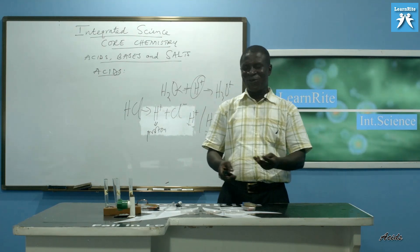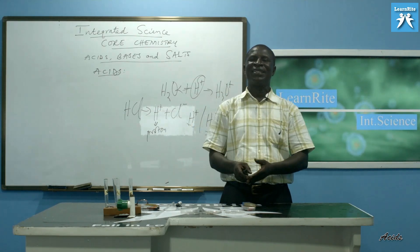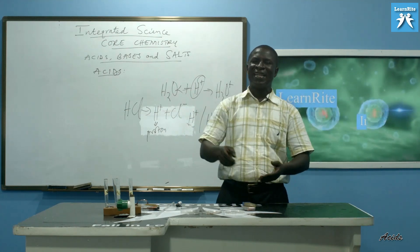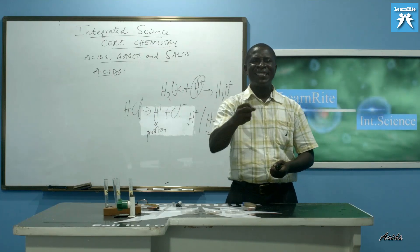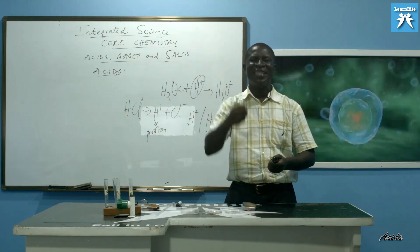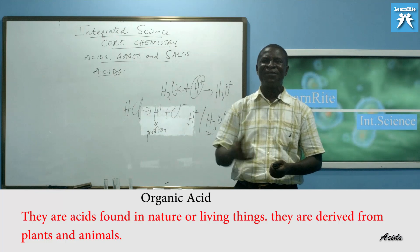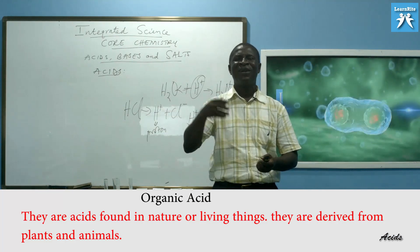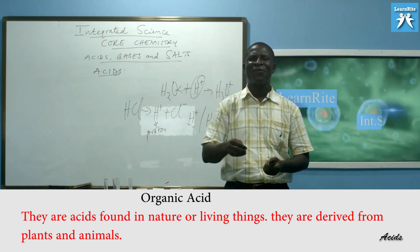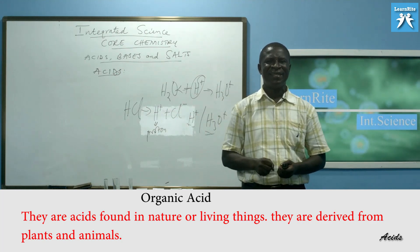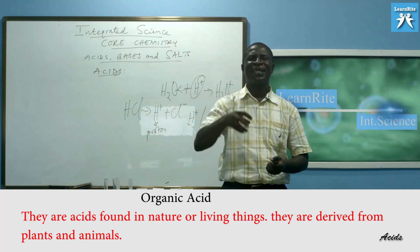Our next group to know is organic acids. So I told you we have two groups of acids. Inorganic acids and then organic acids. What are organic? Anything organic is natural. We find it in nature. So there are acids found in nature or acids found in living things. There are acids derived from plants and animals. Yes, we get them from plants and animals.